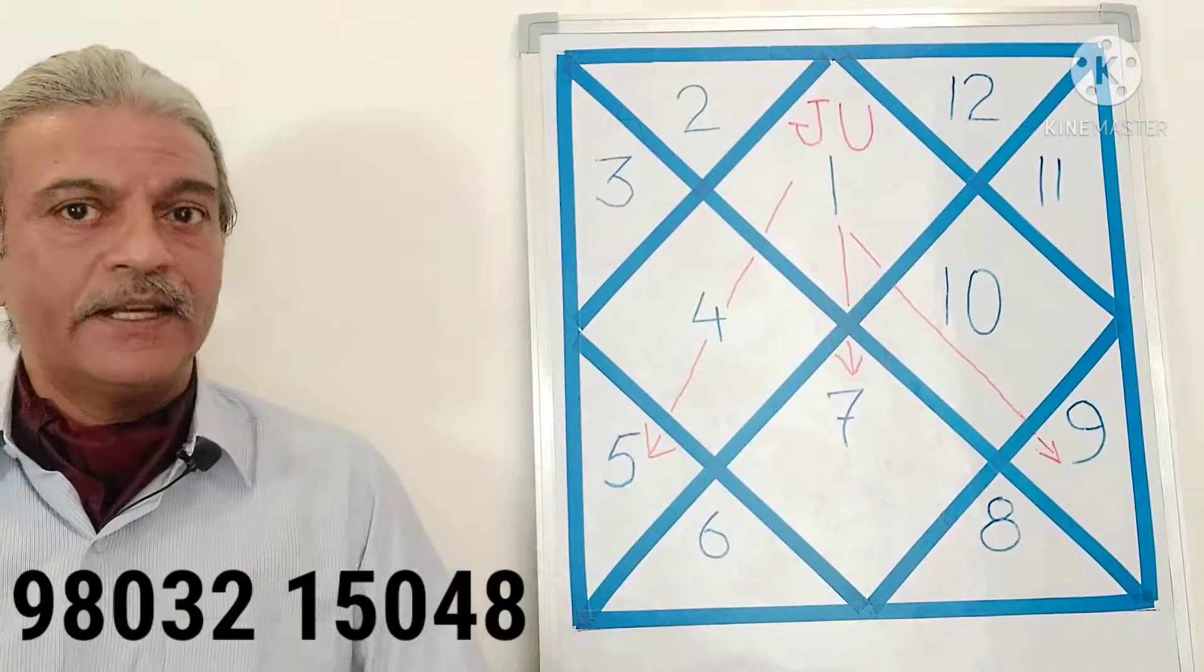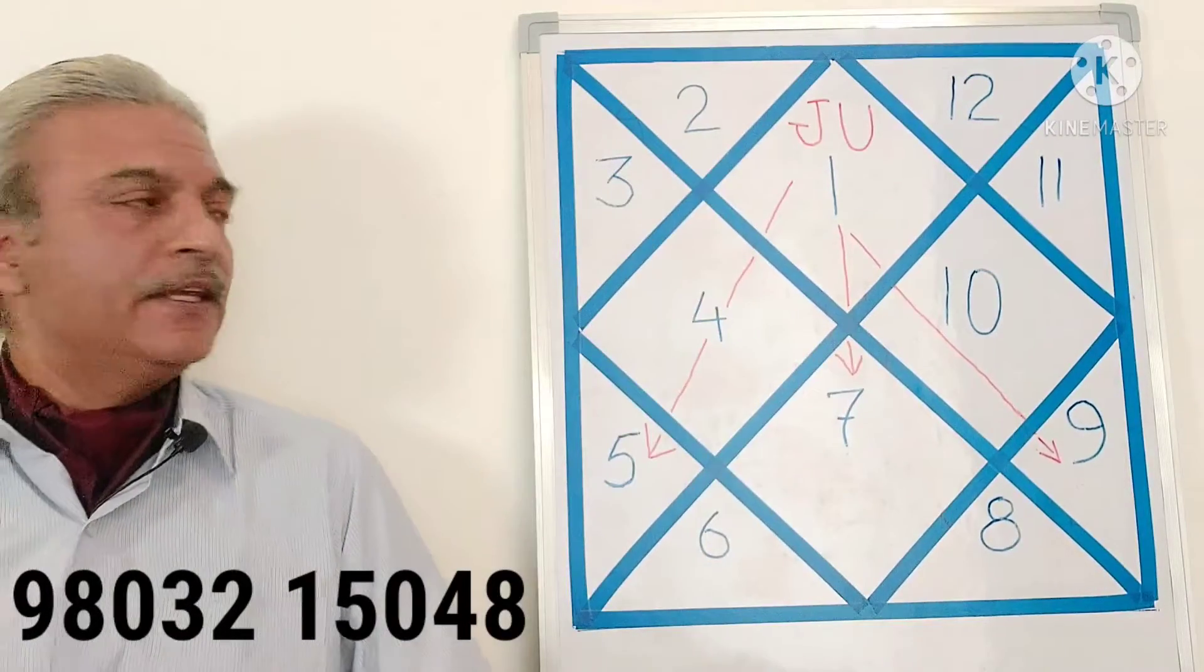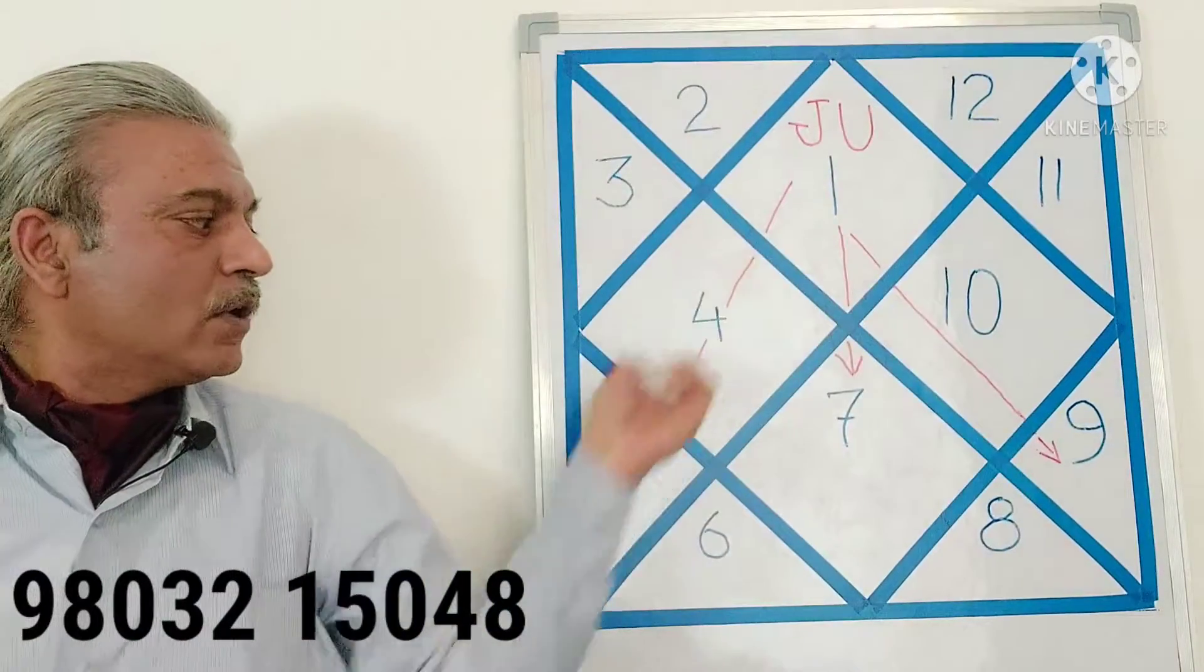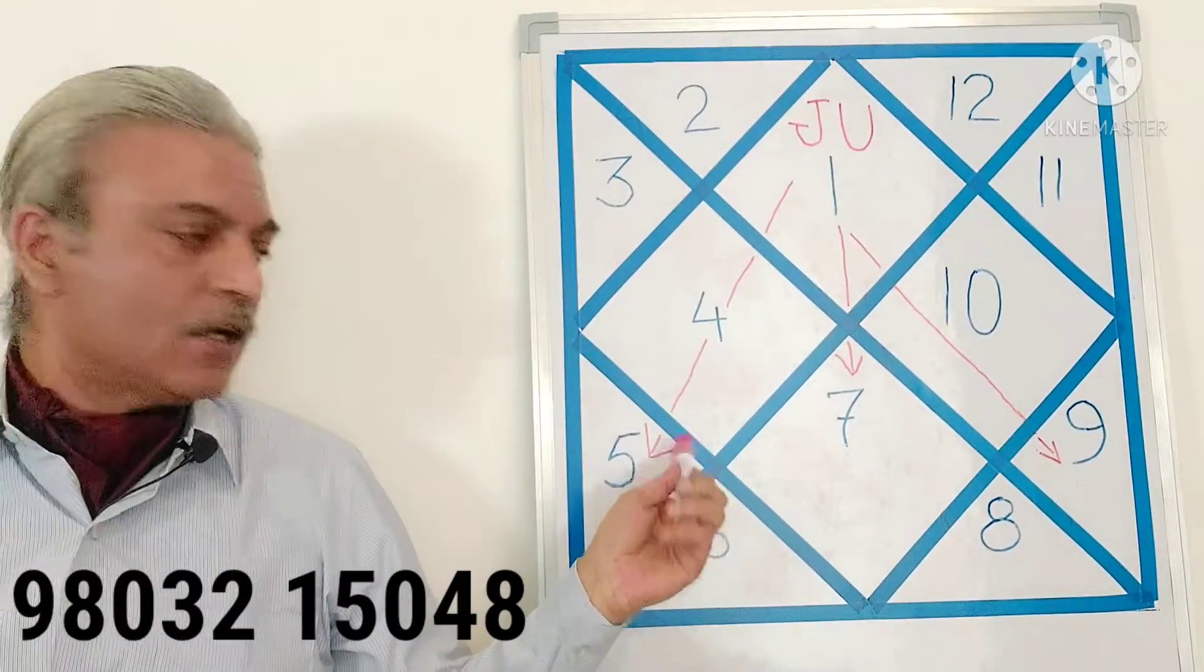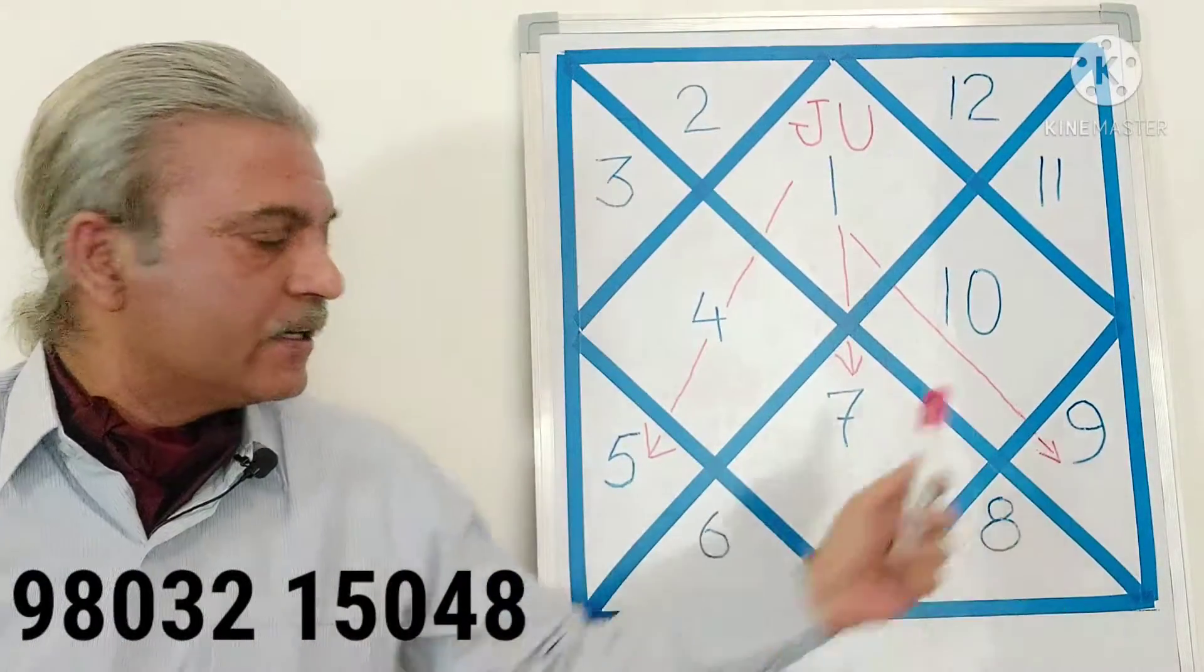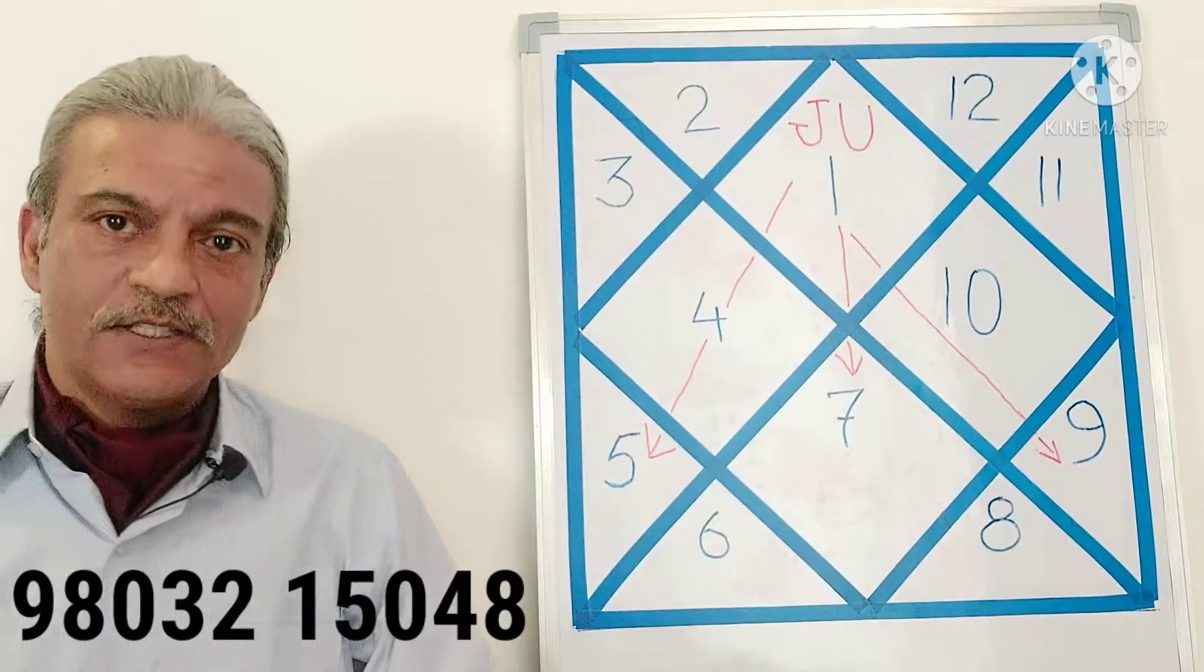How does it do that? In case Jupiter is sitting in the 1st house, then it will aspect the 5th house (1, 2, 3, 4, 5) and the 7th house (6th and 7th) and the 9th house (8th and 9th). So it will aspect these 3 houses.